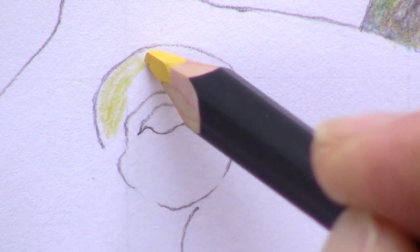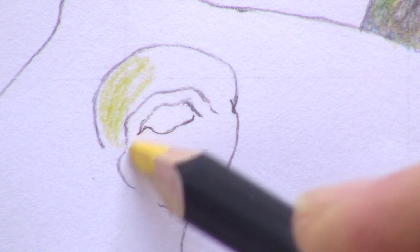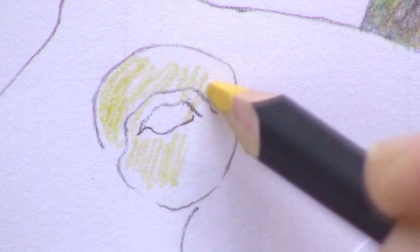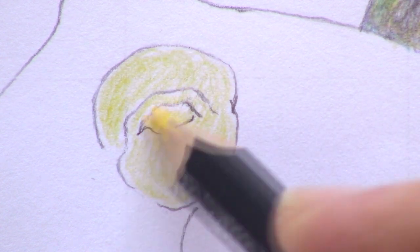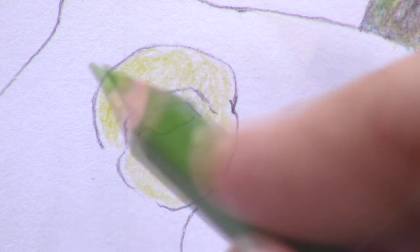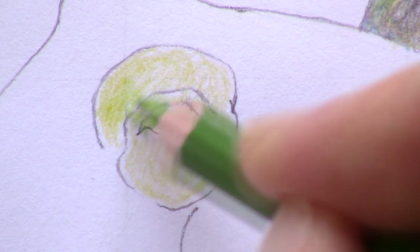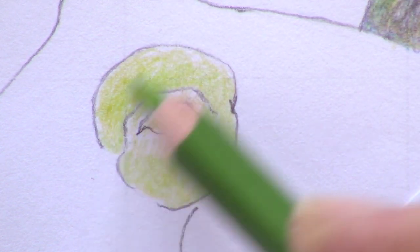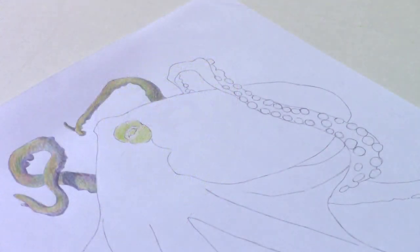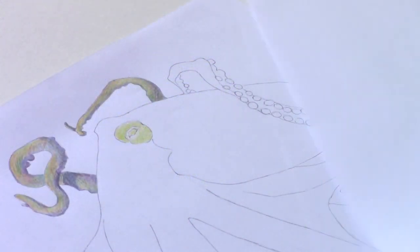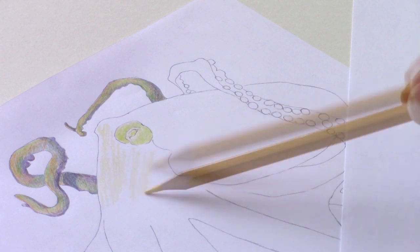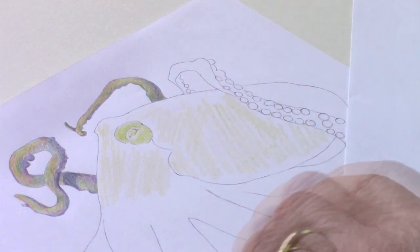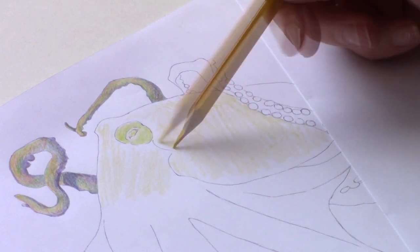Now I start to do some work on the eye. I begin by shading with a yellow pencil, and then I add a layer of green over the top. Now I start to use some base color over the head, I start with yellow, and then I add some green over the top, and in places in the shady areas I add some blue.